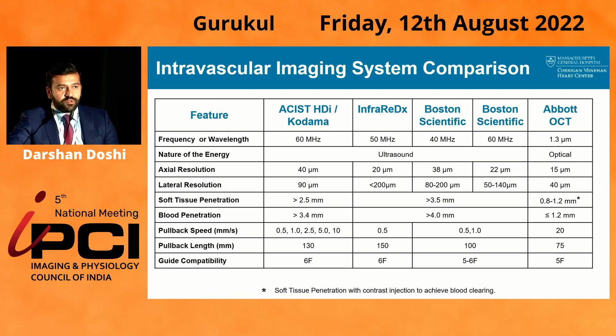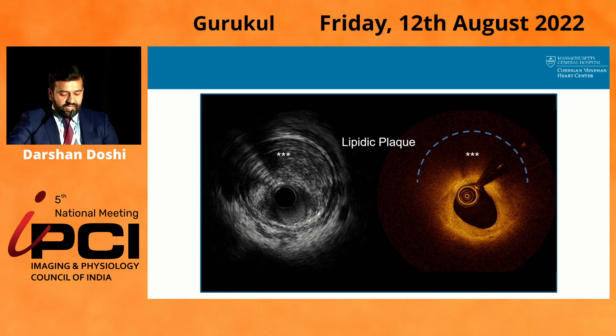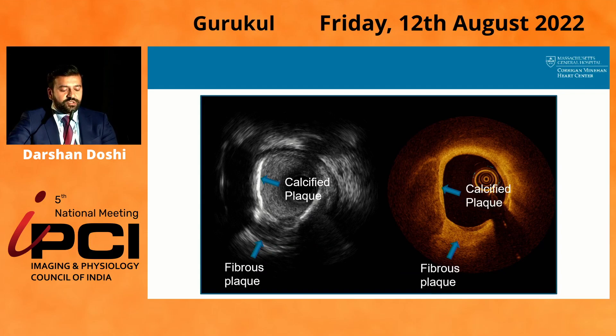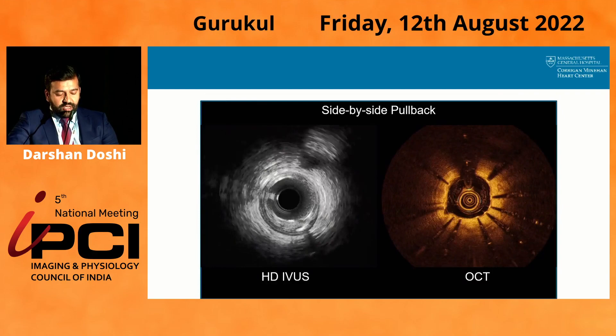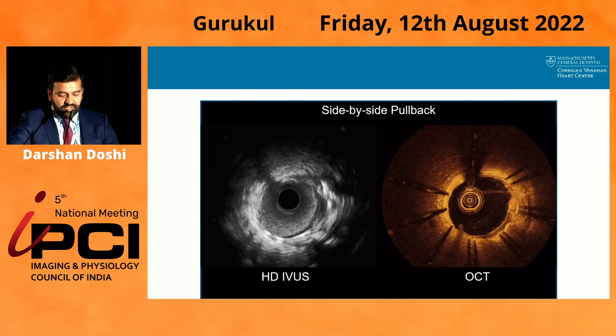These high-definition systems give you near-OCT resolution — they've gotten that good. Looking at lipidic plaque, the high-definition IVUS gives results very comparable to OCT. For a combination of fibrocalcific plaque, you can distinguish the fibrous and calcific components with HD IVUS in a way comparable to OCT. And on a full pullback, you can see from side to side that you have near-OCT resolution and quality with higher-definition IVUS.